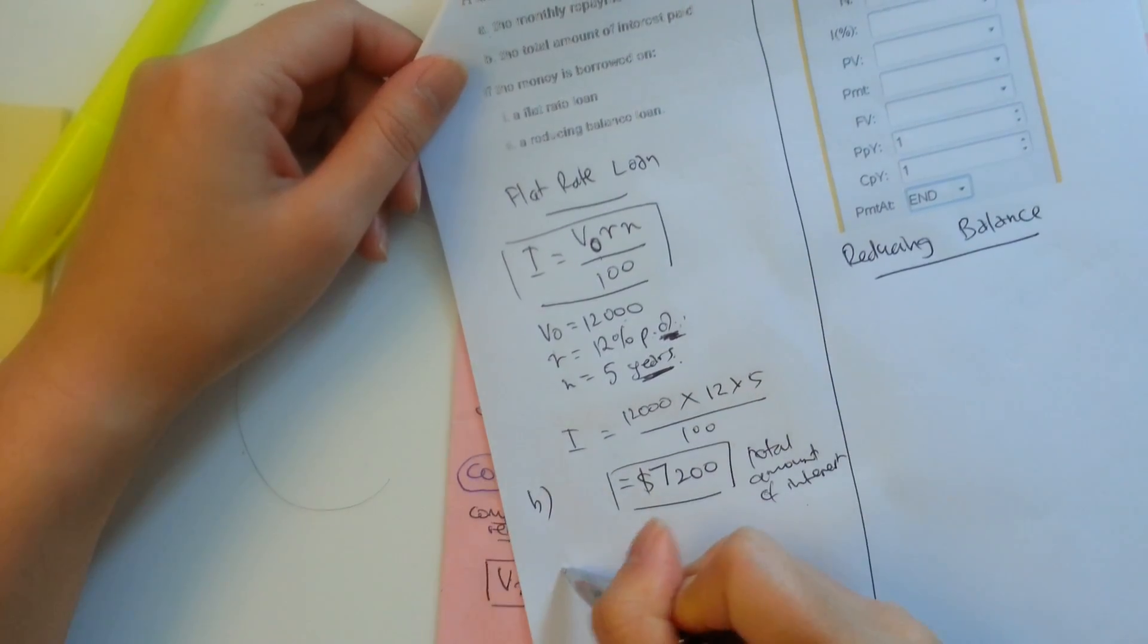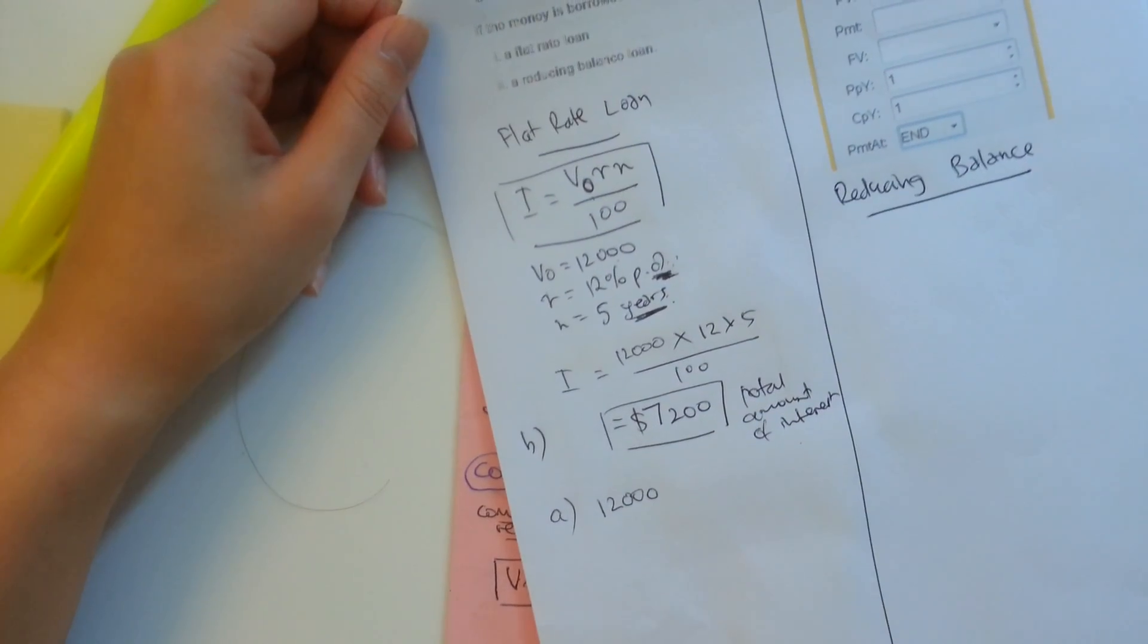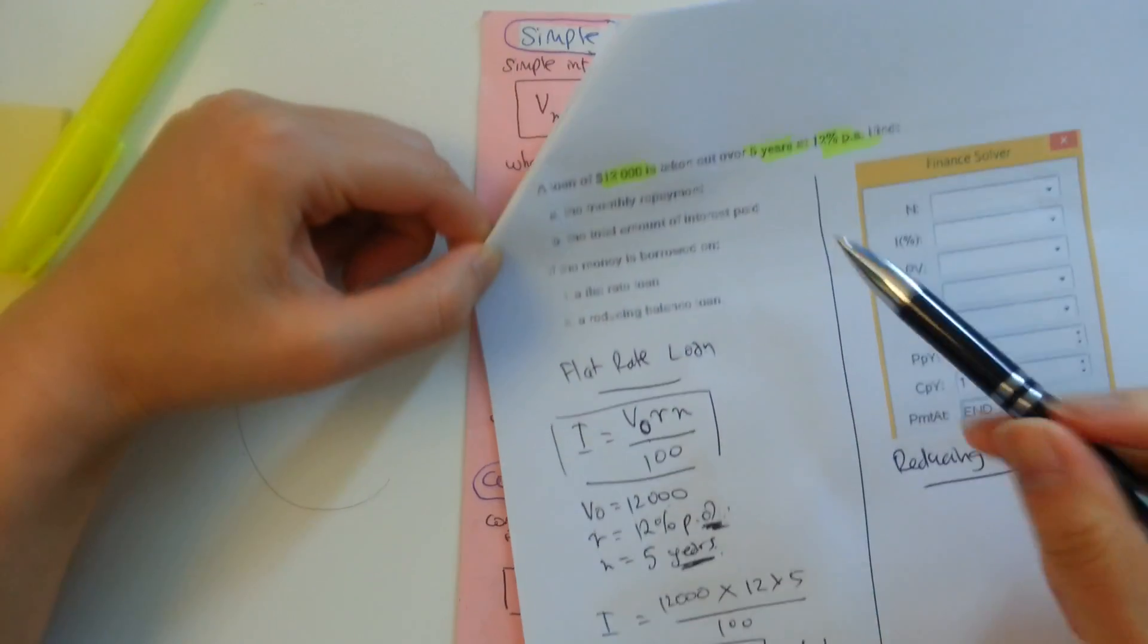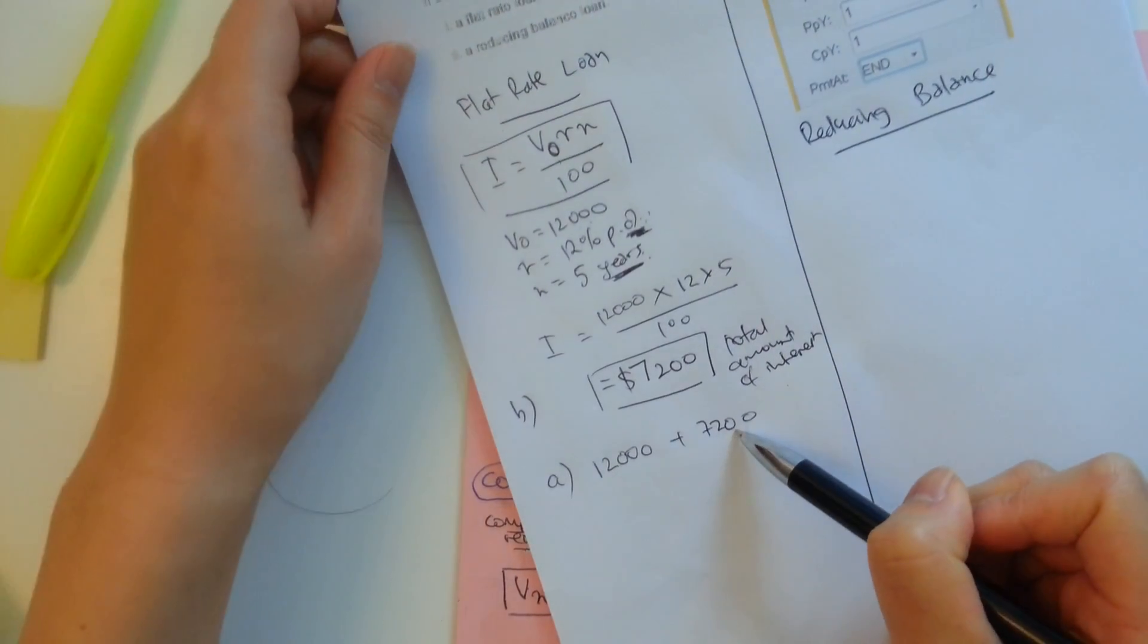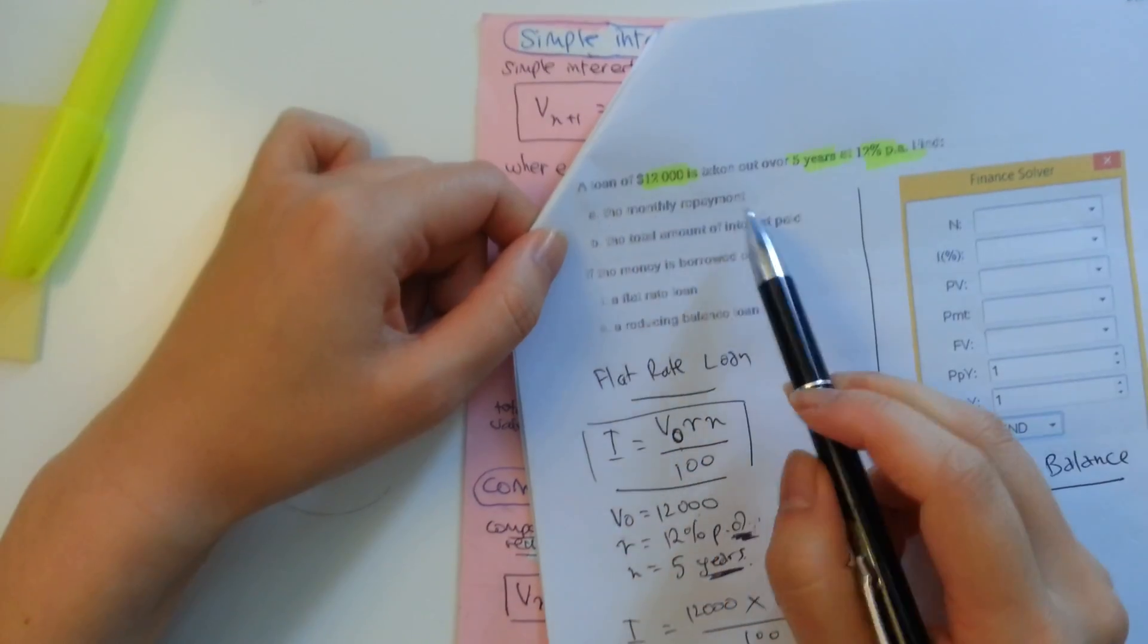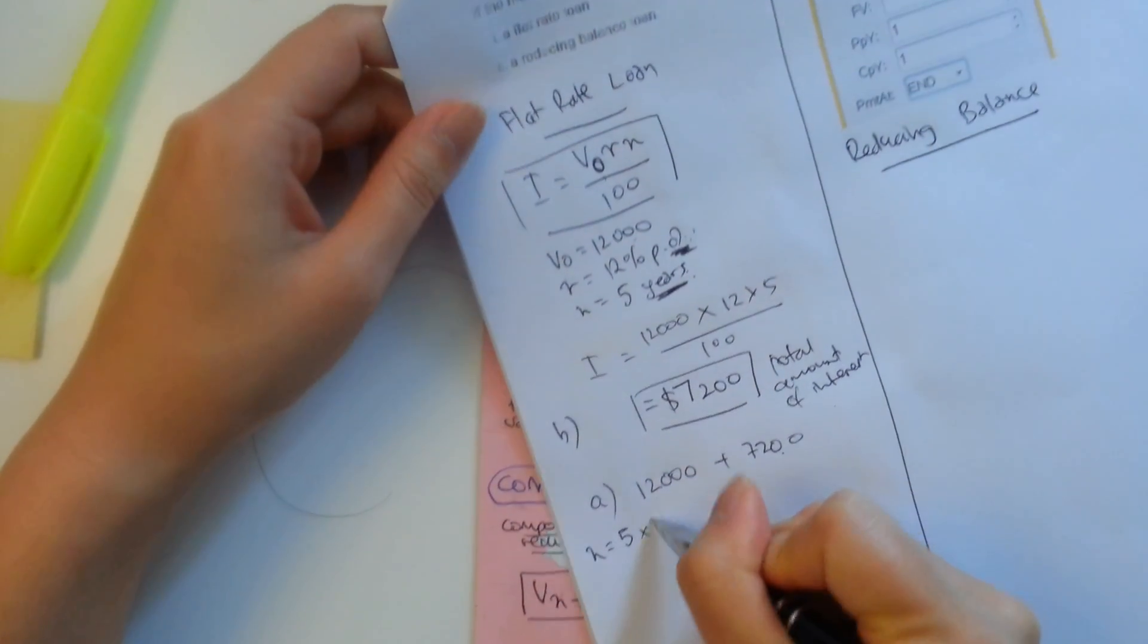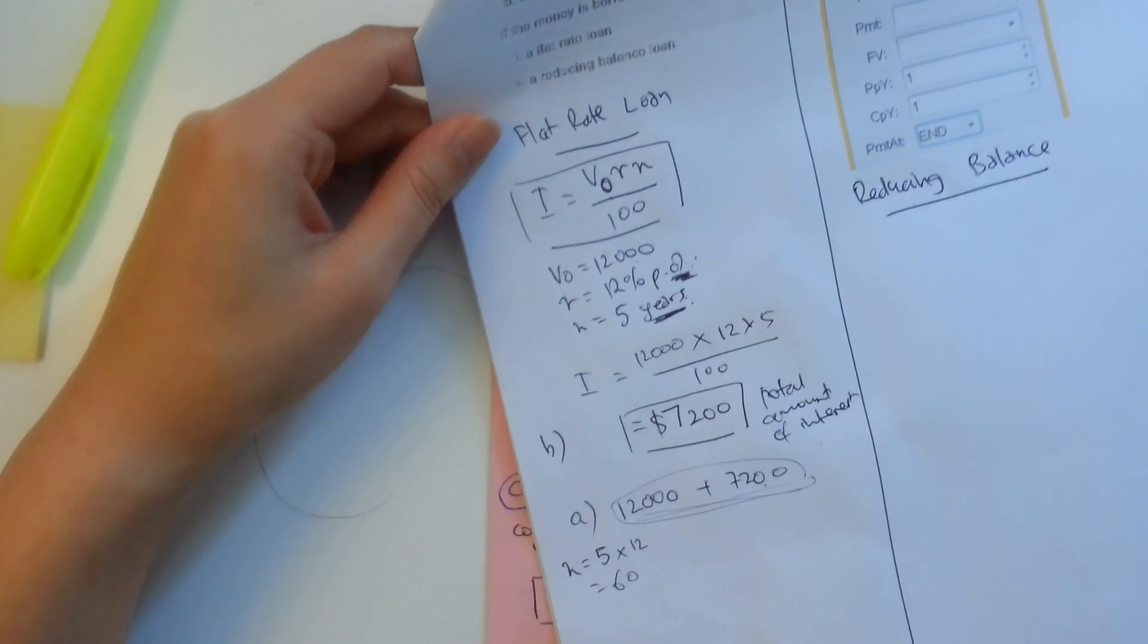All right. So the monthly repayment. So when you're on a flat rate loan and you're paying this loan off, what you need to do is you need to pay a portion of the principal that you owe and also a portion of the interest that you owe that is to be charged as well. So how do we do this? Well, it's really easy. Remember, we're paying a bit of the $12,000 and also a bit of the $7,200. So how much do we have to pay? Well, it's paid over five years. So basically, if you add them together, we have to find out the monthly repayment. So five years and we're paying 12 times a year.